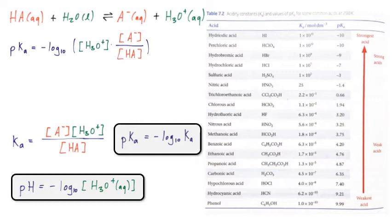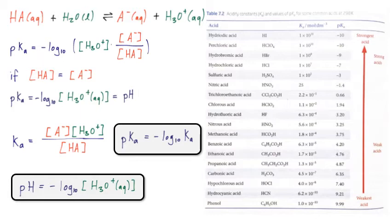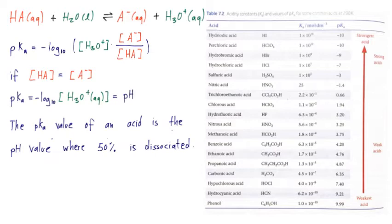Let's look more closely at what the pKa value actually means. Plugging the Ka definition into the pKa formula: if we have equal quantities of the acid and its conjugate base, their ratio is 1 and cancels out, leaving only the hydronium ion concentration. That remaining expression is just the pH value. So the pKa is the pH value at which 50% of the acid is dissociated — a good way to memorize it.